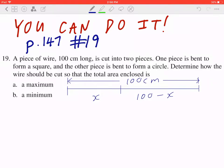Now, if I take the first piece, x, and I bend this into a circle, and if I take the remaining part, 100 minus x, and I bend this into a square, here's what it looks like.